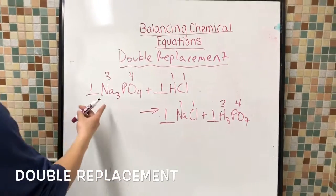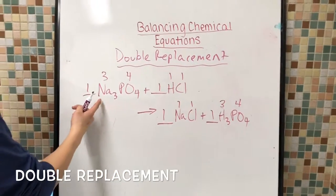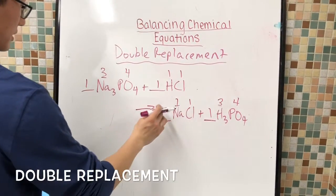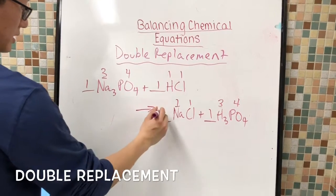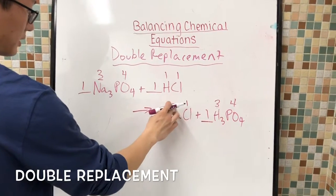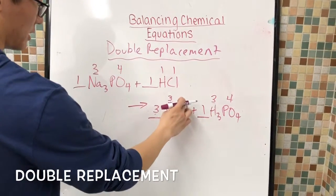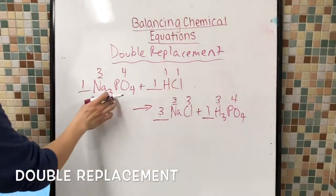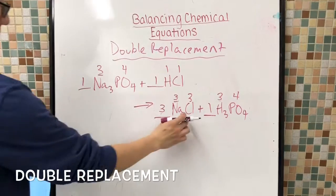So if we first look at Na here, there are three atoms compared to one over here. So if we turn this into three, this one turns into three, and this chlorine turns into three as well. So now these Nas are balanced.